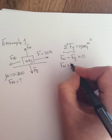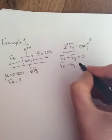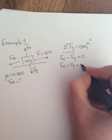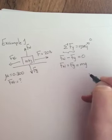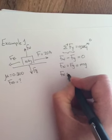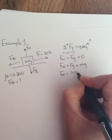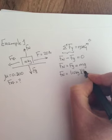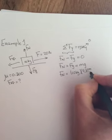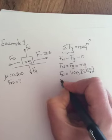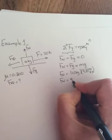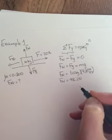So FN then will equal FG. And we know from earlier, a few videos ago, that FG equals MG. So we can find our FN. It's just 10 kilograms times 9.81 meters per second squared. And when you multiply those out, you get 98.1 newtons.